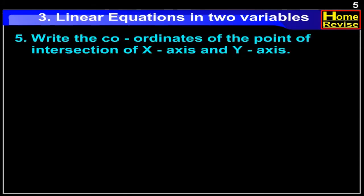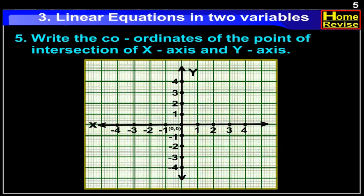Write the coordinates of the point of intersection of the x-axis and y-axis. If you see this graph, you will notice that the coordinates of the point of intersection of the x-axis and y-axis are (0, 0).